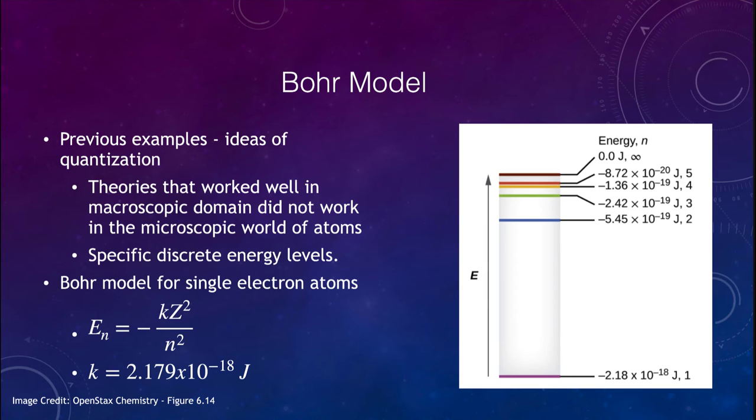Now the other thing we want to look at is the Bohr model of the atom. Previously we looked at ideas of quantization. Theories that were developed on larger scales did not work in the world of atoms. That's because atoms have specific discrete energy levels. In an atom, you can have an energy in the ground state, in the second state, third, and so on.